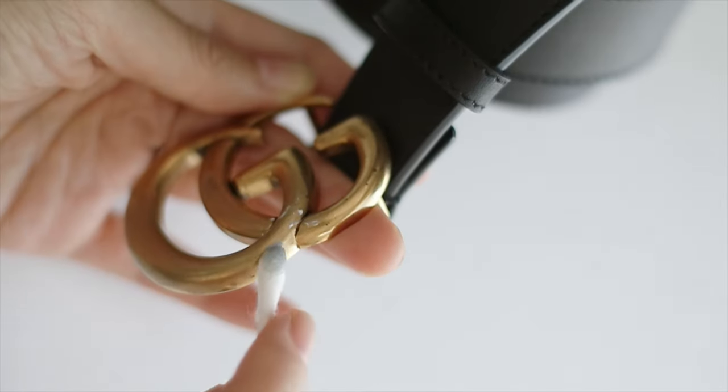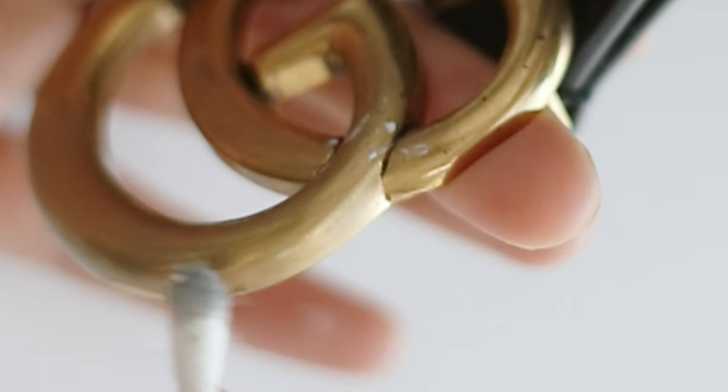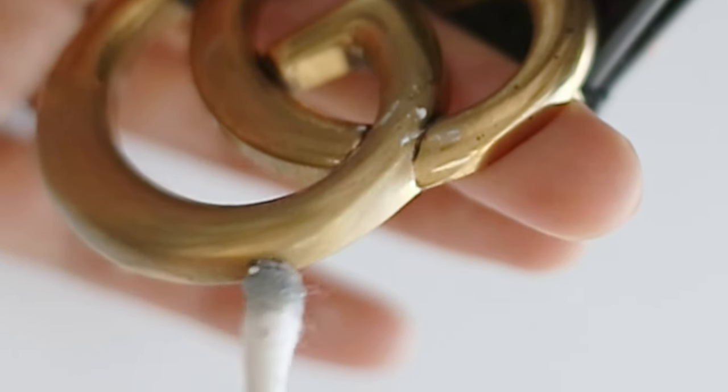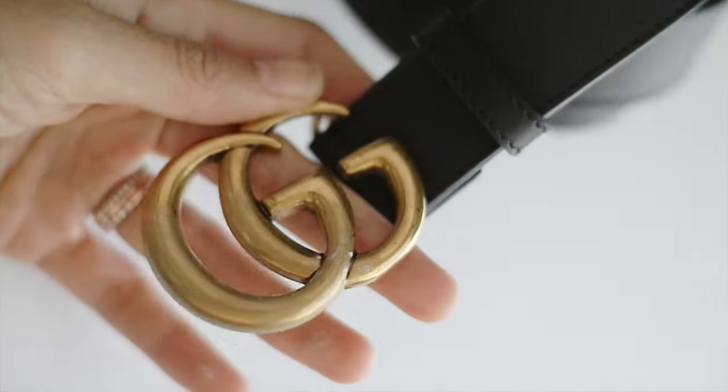It only took a few seconds of applying the metal polish to see the oxidation marks disappear. I adjusted the pressure of how I was applying the metal polish depending on how dark the oxidation marks were.